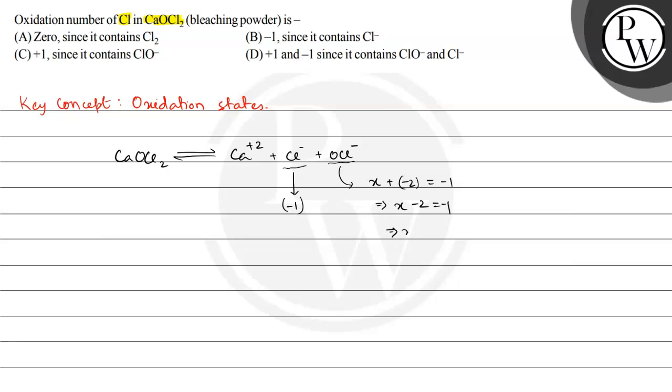And x is equal to +1. So one oxidation state of chlorine is -1 and another oxidation state of chlorine is +1 in OCl- and Cl- is present as Cl- only.